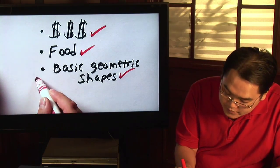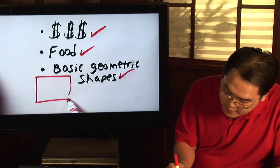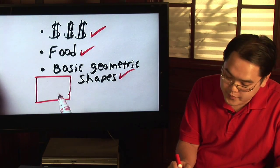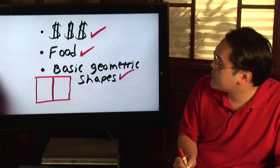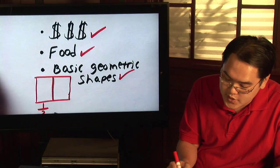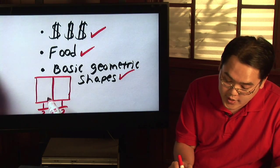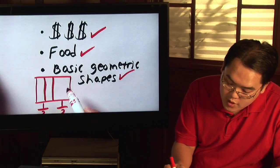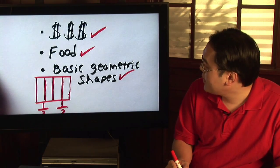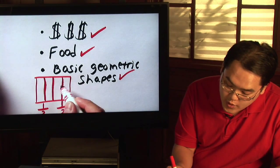For example, if you have a rectangle, you can break it up into two pieces and say that each rectangle represents half. Or you can take a rectangle and break it up into four equal pieces, and so each rectangle represents one fourth of it.